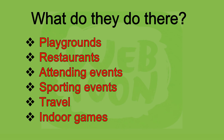And what do they do there? At playgrounds, maybe they are playing. At restaurants, they are eating. Attending events — maybe they have events like wedding events, or a reunion. For sporting events, maybe they are watching, or they went to the stadium. For travel, they go to a place for relaxation, to use their free time. For indoor games, maybe they have a badminton tournament there — if they are not at school or if they are at home.